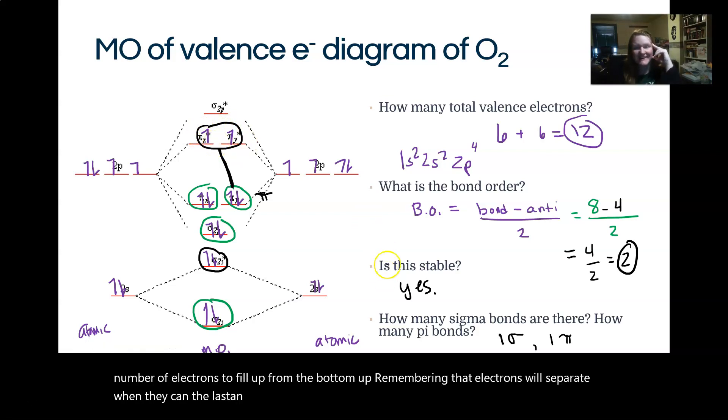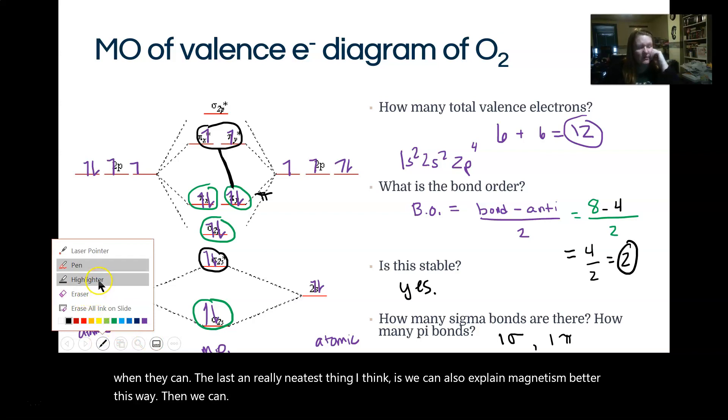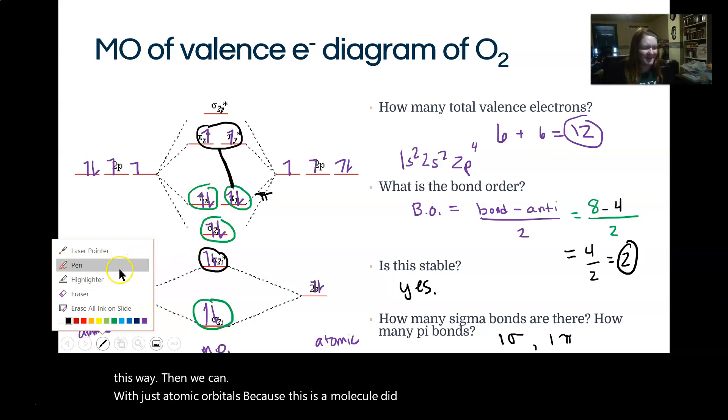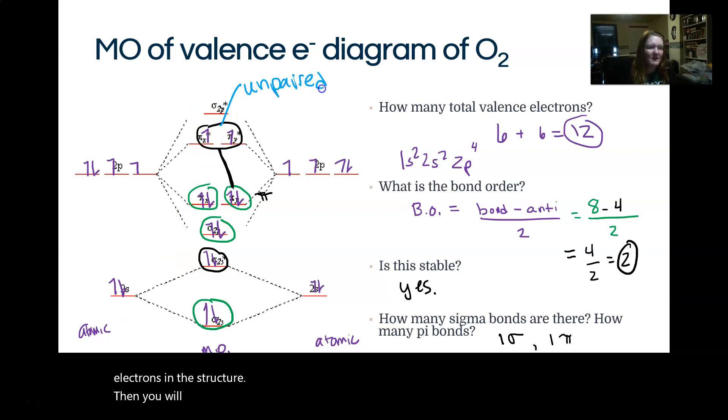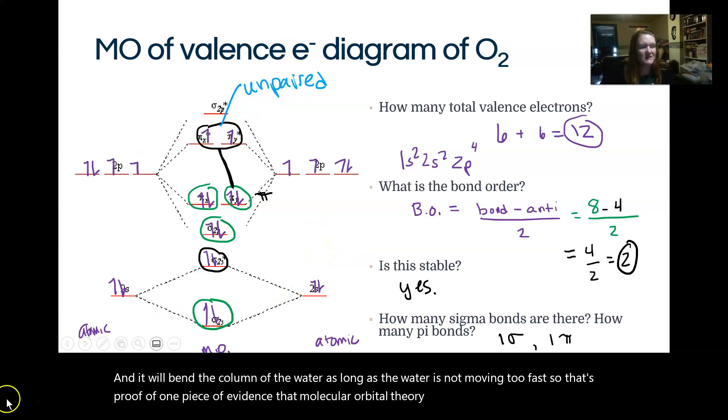The last and really neatest thing, I think, is we can also explain magnetism better this way than we can with just atomic orbitals because this is a molecule. Did you know that molecules can be magnetic? Yeah, they absolutely can. So what I mean by that is if we have any unpaired electrons in the structure, then you will have magnetic character in it. If you did the MO diagram for water, you would find that there are unpaired electrons and that means water is magnetic. If you've never tried it, turn on a thin stream of water in a faucet and put a strong magnet next to it or even just a balloon that you rub on your head and it will bend the column of the water as long as the water is not moving too fast. So that's proof of one piece of evidence that molecular orbital theory is pretty good at explaining the behavior of molecules.